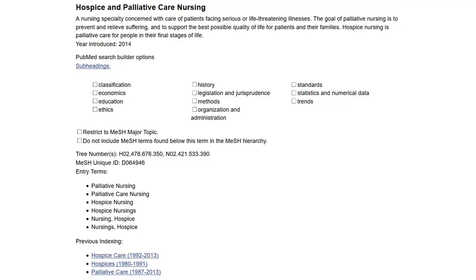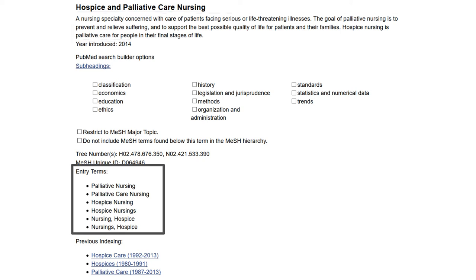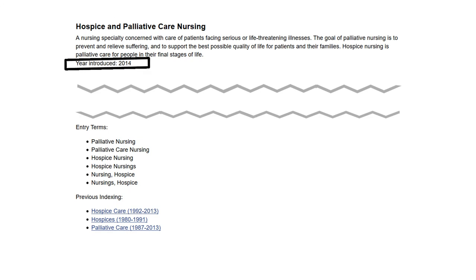Here's an example entry inside the MESH database. Each page will have a term definition, the year the term started, and a list of related terms. Knowing previous MESH terms for your topic can be important — if you need articles from before your term was introduced, you'll want to add these previous terms to your search as well.